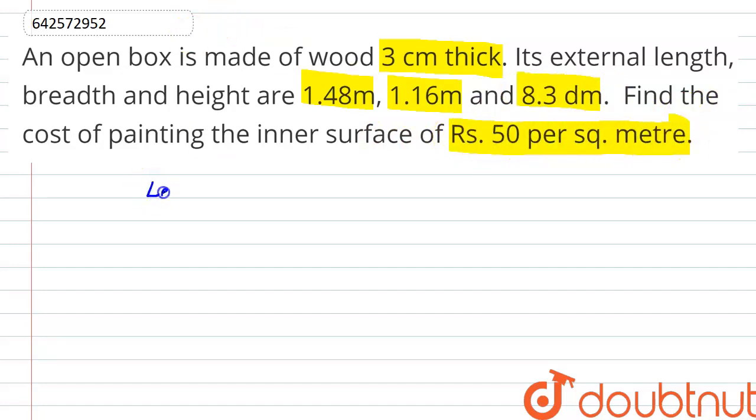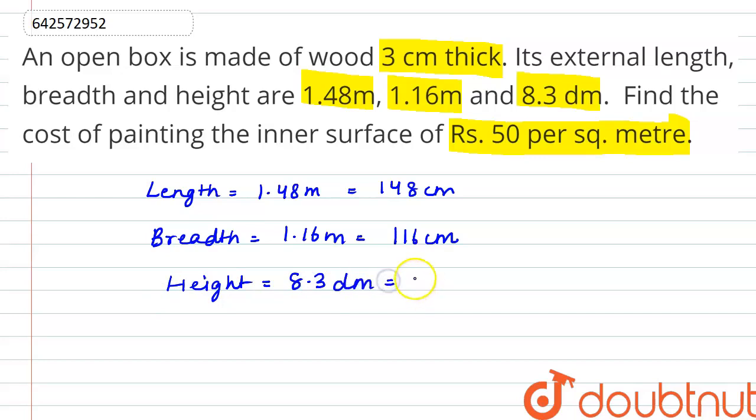So we are given that the length is 1.48 meters or it can be written as 148 centimeters. The breadth is 1.16 meters or it can be written as 116 centimeters. And the height is 8.3 decimeters. We can say that as 83 centimeters.